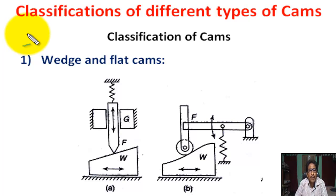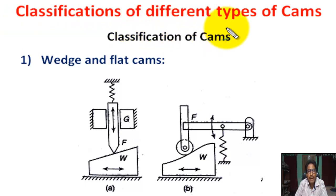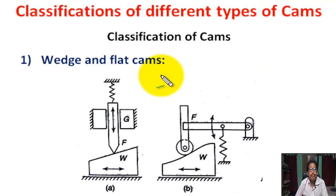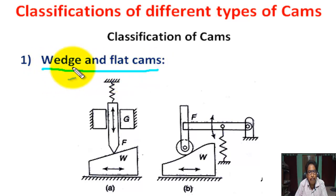Students, today we are going to learn about different types of cams. Classification of different types of cam. Number 1 classification: wedge and flat cam.